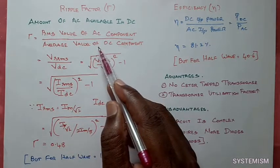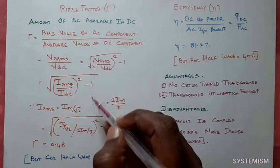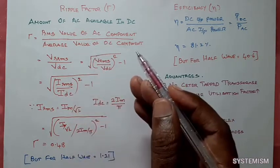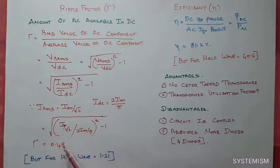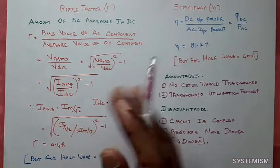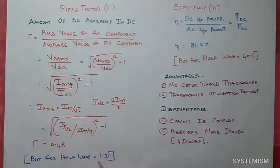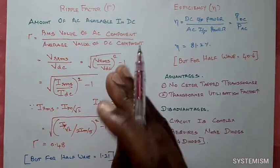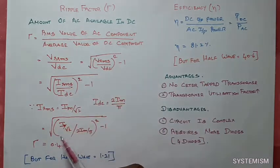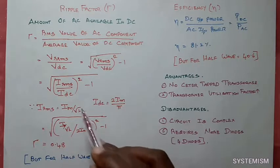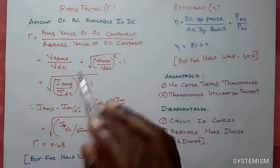Ripple factor is defined as the ratio of RMS value of AC component to the average value of DC component — how much amount of AC is present in DC. The derivation part we will see in another video. The ripple factor value for bridge rectifier or full wave rectifier is 0.48. At the same time, the half wave rectifier's ripple factor is 1.21. Ripple factor value should be less for a good rectifier. Here the unwanted signal value is less compared with your half wave rectifier, so that is why we mostly use bridge rectifier for our circuits.